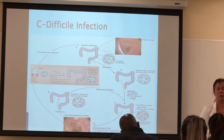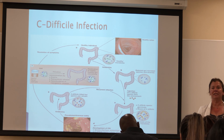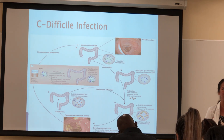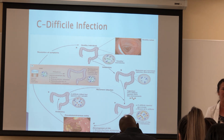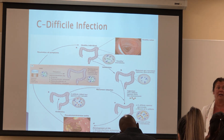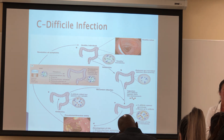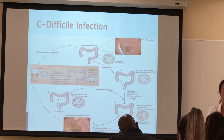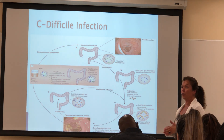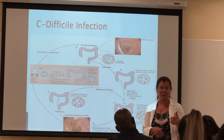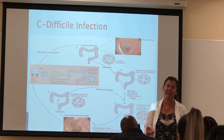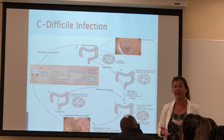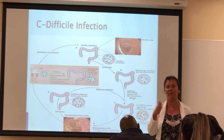Severe C. diff is basically the opposite — same signs and symptoms but WBC more than 15,000 and creatinine more than 1.5. That means the amount of stools has compromised renal function. That patient cannot stay outpatient; they must be admitted inpatient to treat their acute kidney injury. You will give vanco PO and flagyl PO, and since these patients are so dehydrated, most likely you will also give vanco PO and flagyl IV.